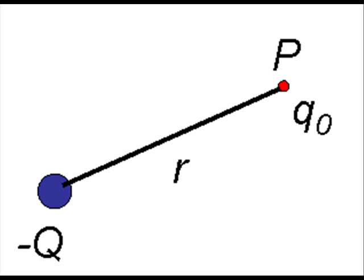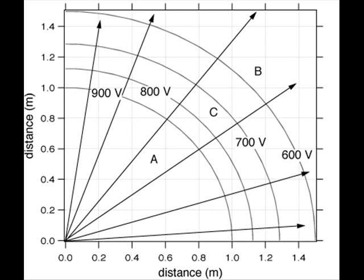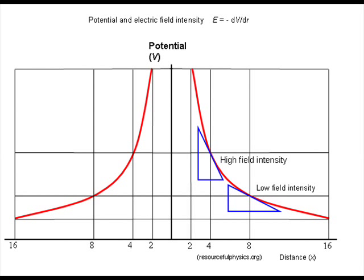The electrical condition produced in a space by the presence of electrically charged bodies is called an electric field. Points which all have the same potential voltage are located on equipotential surfaces. Forces always act in the direction of potential gradient. The electric force which is exerted upon a charge of unit magnitude in an electric field is called the field strength or field intensity. It is always directed perpendicularly to the equipotential surfaces.